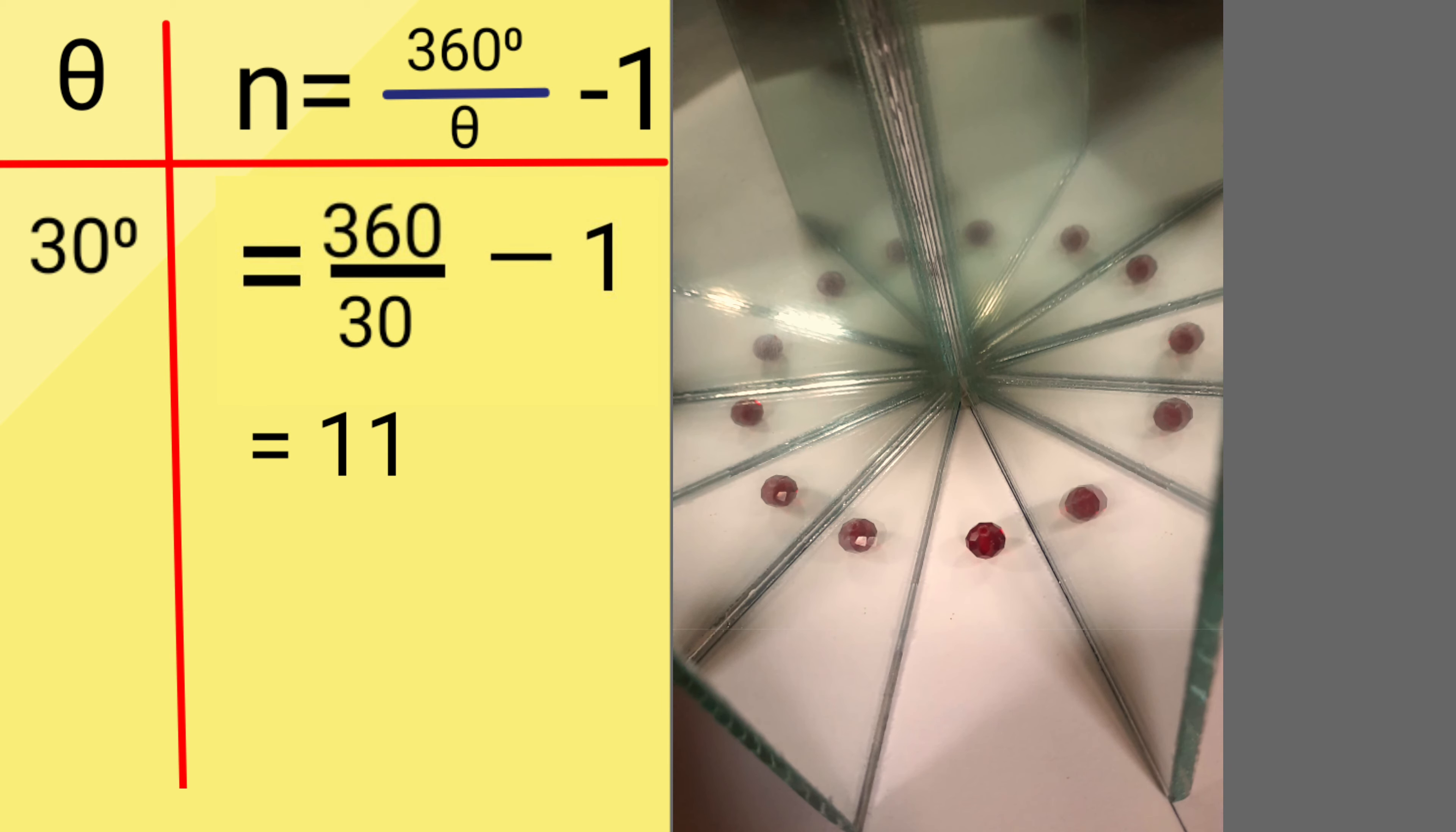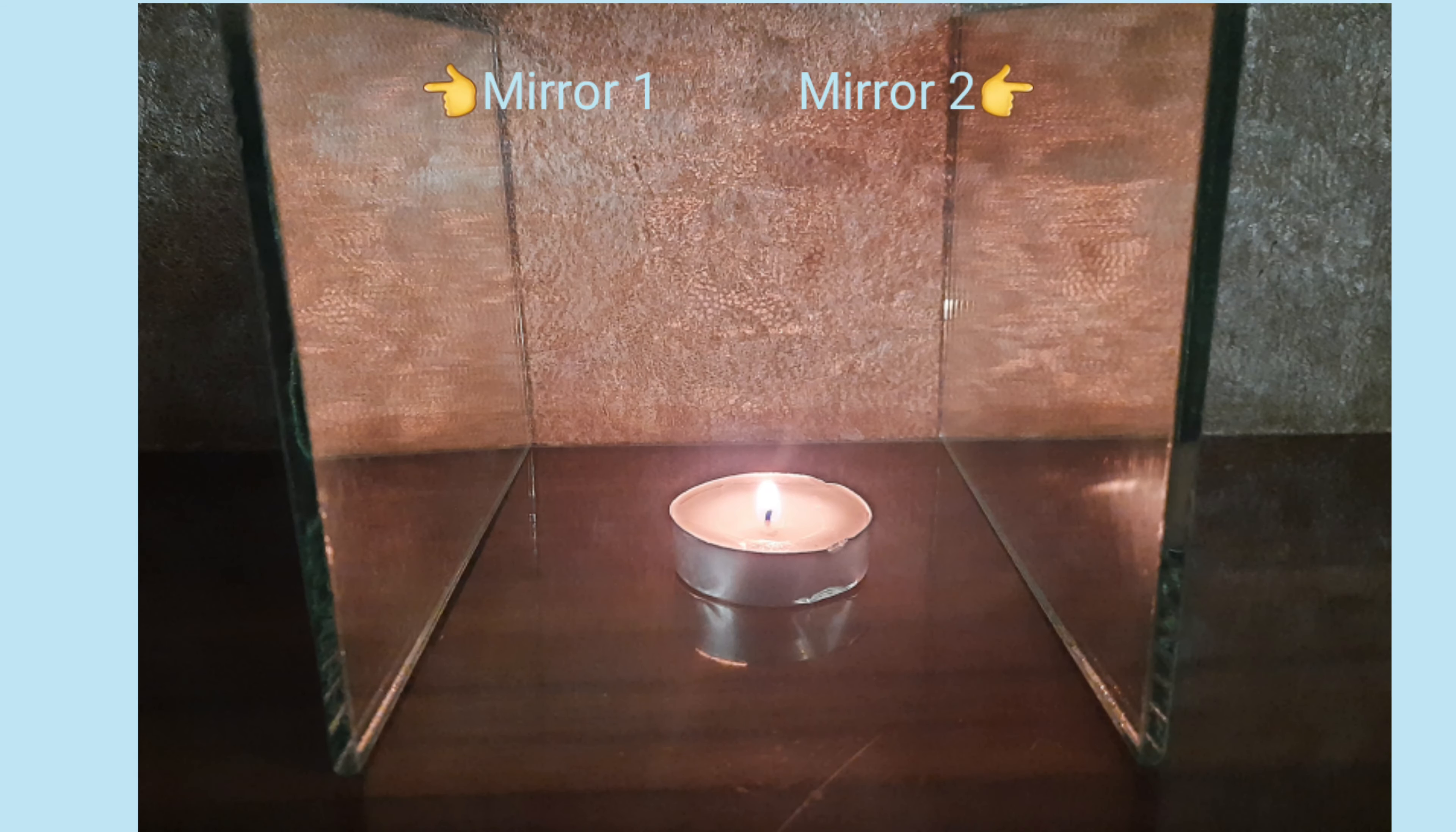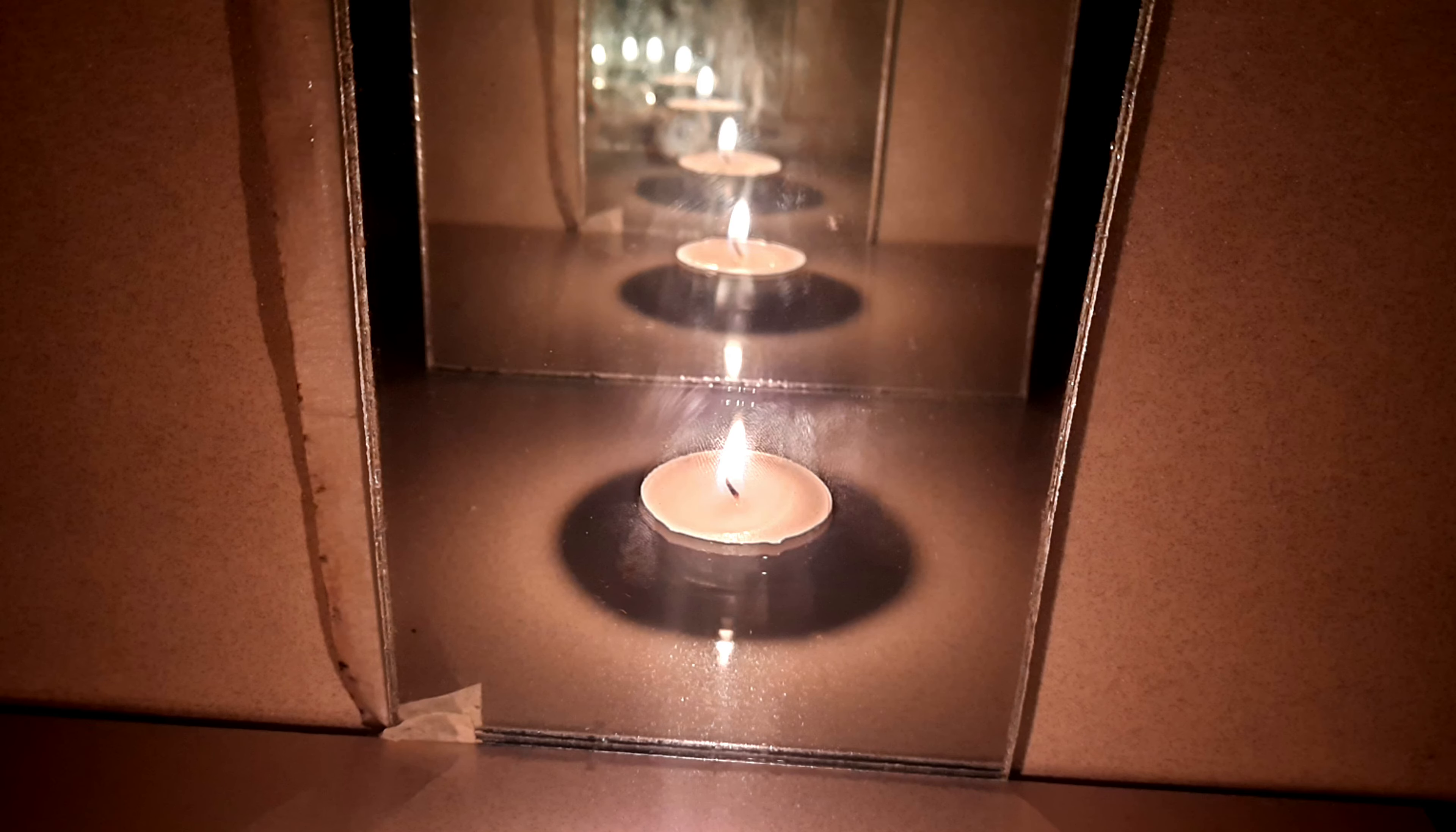Now can you tell me the number of images formed when the two mirrors are placed parallel facing each other? Let's see. Oh, we get so many images. They are infinite. But why? The image formed by one mirror acts as an object for the other mirror. So we get infinite images.